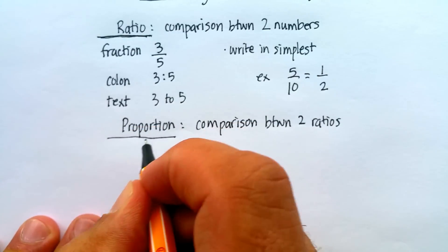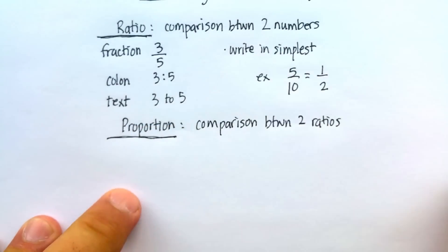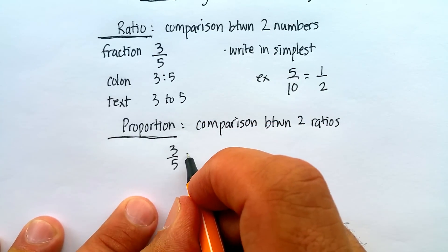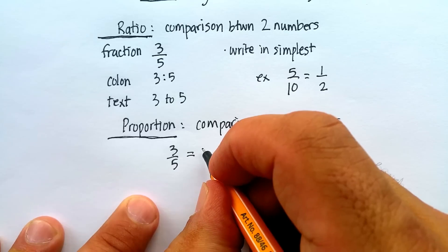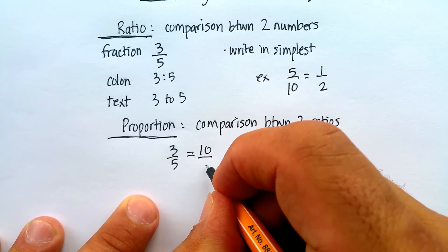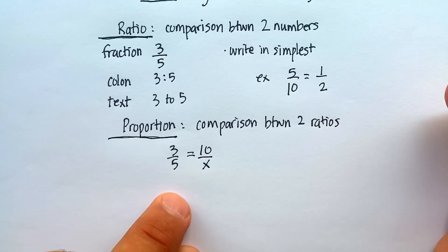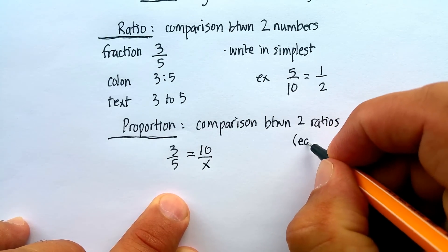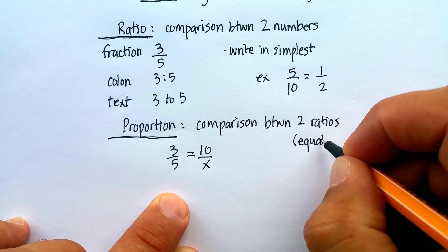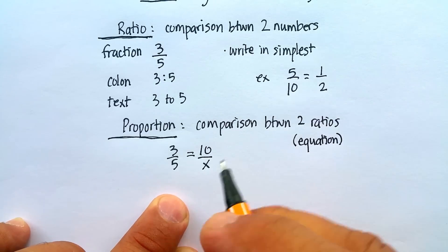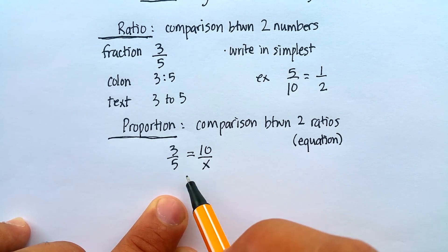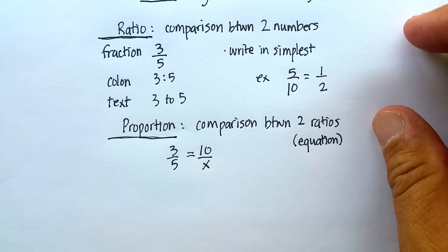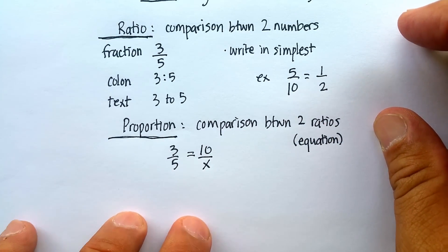For example, I would say something like 3 is to 5 as 10 is to X. So, in other words, a proportion is really just an equation. You set two ratios equal to one another, and then you find out what the missing value is.